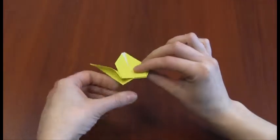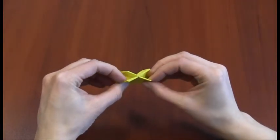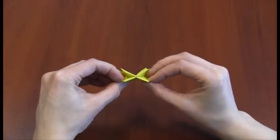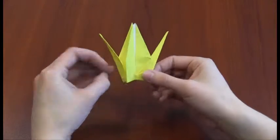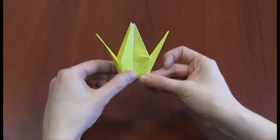If you've done this correctly, looking at the bottom of your figure, you should see a shape like an X. If you made it through this part, it's clear sailing from here on out.